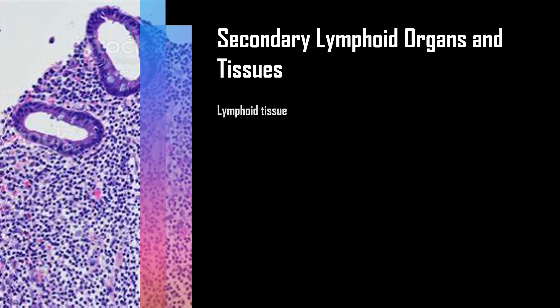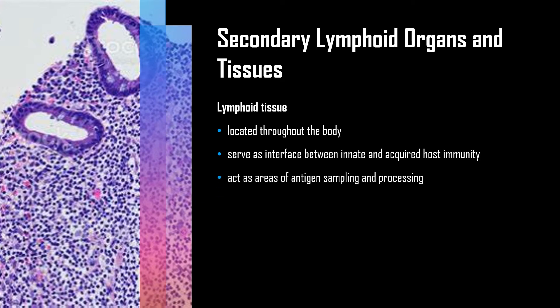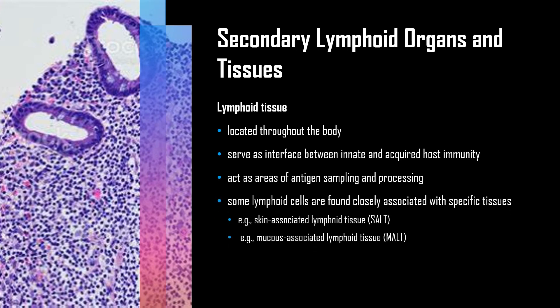Lymphoid tissues are also located throughout the body and serve as an interface between innate and acquired host immunity. They act as areas of antigen sampling and processing. Some lymphoid cells are found closely associated with specific tissues — for example, skin associated lymphoid tissues are called SALT, and mucosa associated lymphoid tissues are known as MALT.